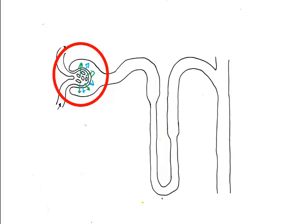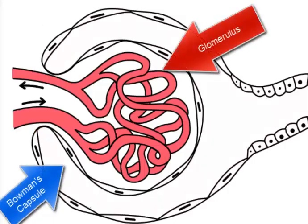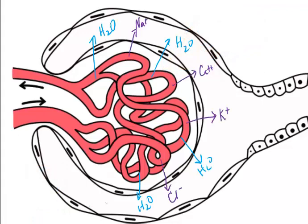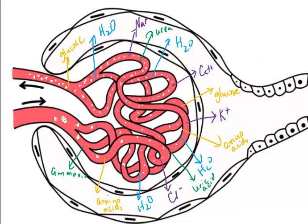Many of these will eventually be reabsorbed into the blood by active transport, and water will return by osmosis. The filtrate consists of one-fifth plasma, which is mostly water, ions, nutrients, and nitrogenous wastes.